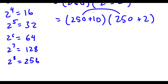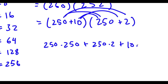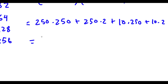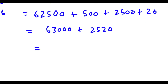To multiply these, I'll first distribute 250: 250 times 250, plus 250 times 2. Then distribute the 10: 10 times 250 plus 10 times 2. So this equals: 62,500, plus 500, plus 2,500, plus 20. Now adding: 62,500 plus 500 is 63,000, and 2,500 plus 20 is 2,520. Finally, 63,000 plus 2,520 equals 65,520.